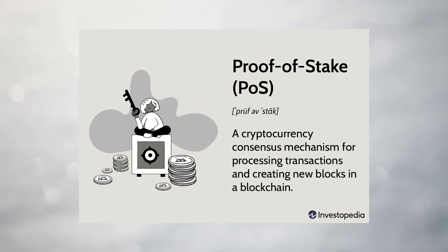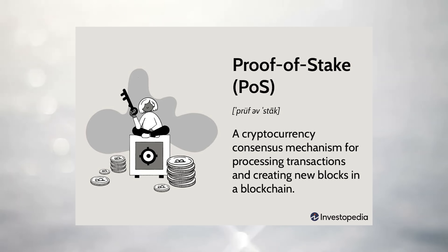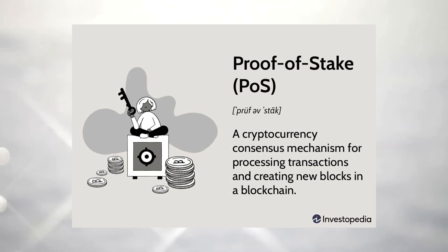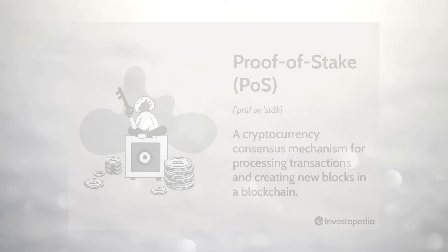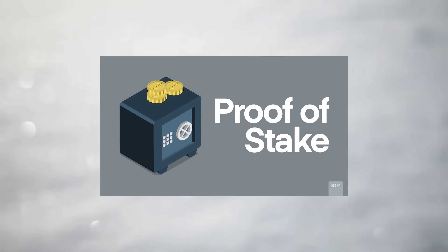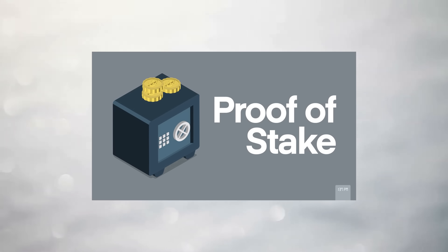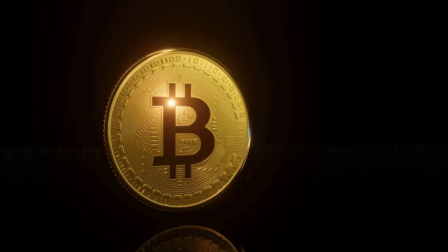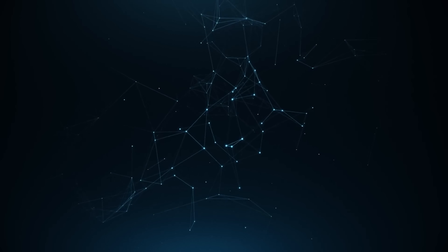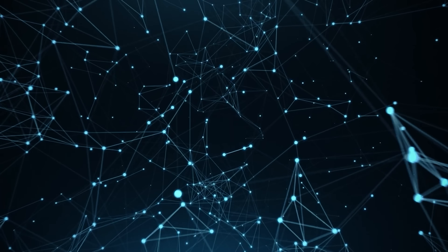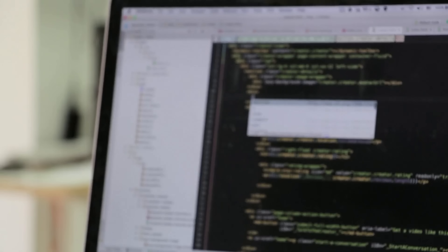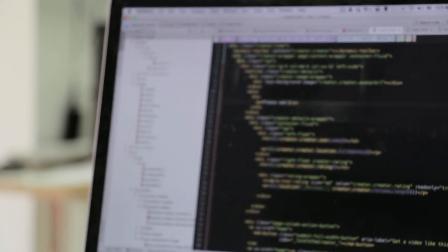To better understand what staking is, you need to understand how proof of stake works. Proof of stake is a consensus mechanism that increases the energy efficiency of blockchains while maintaining a high degree of decentralization. If you know how Bitcoin works, you're probably familiar with proof of work — a mechanism that gathers transactions into blocks and connects them to create a blockchain.